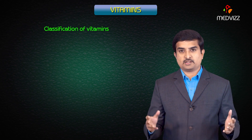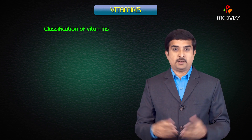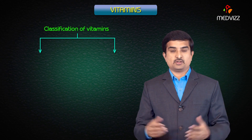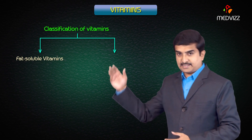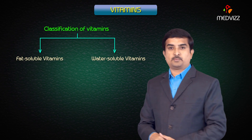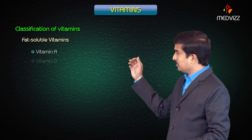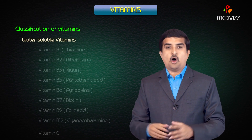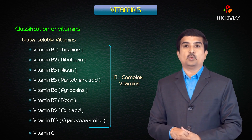Before going into a detailed discussion of various types of vitamins, let us talk about the classification of vitamins. Vitamins are classified depending on their solubility. We have two categories: first, the fat-soluble vitamins, and second, the water-soluble vitamins. The fat-soluble category includes vitamins A, D, E, and K. All B complex vitamins, along with vitamin C, come under water-soluble vitamins.